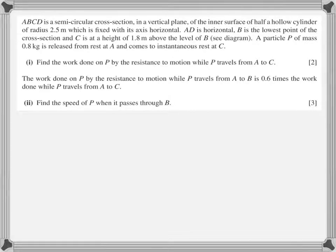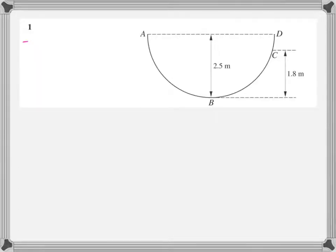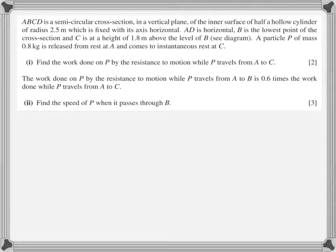Question number one: the diagram shows ABCD as a semicircular cross section in a vertical plane of the inner surface of half a hollow cylinder of radius 2.5 meters, fixed with its axis horizontal. Looking at the diagram, we have a semicircle ABC — it's a cylinder cut in half. B is the lowest point and C is at a height of 1.8 meters above the level of B. A particle P of mass 0.8 kg is released from rest at A and comes to instantaneous rest at C.